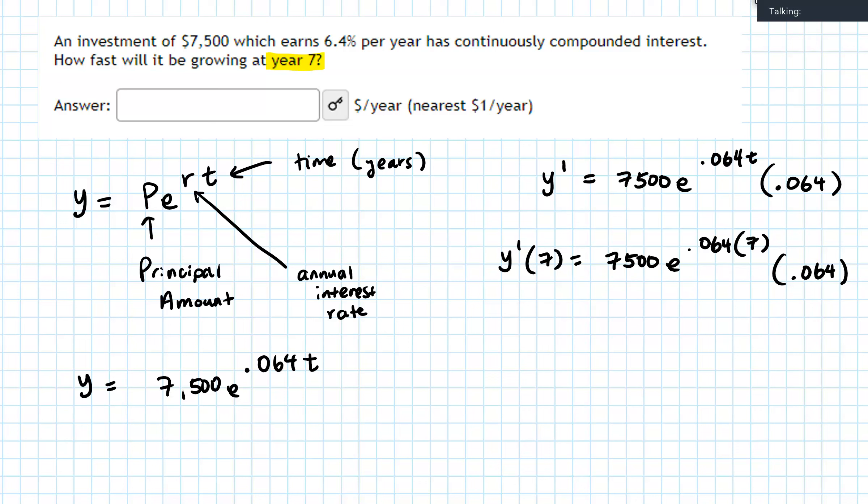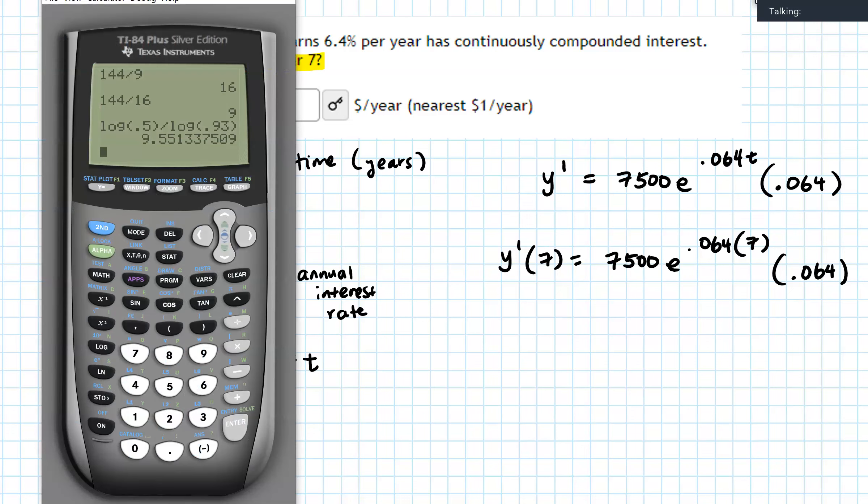And now I'm going to plug this into my calculator. So I have 0.064 times 7,500, times our e button, which is over here. Okay.